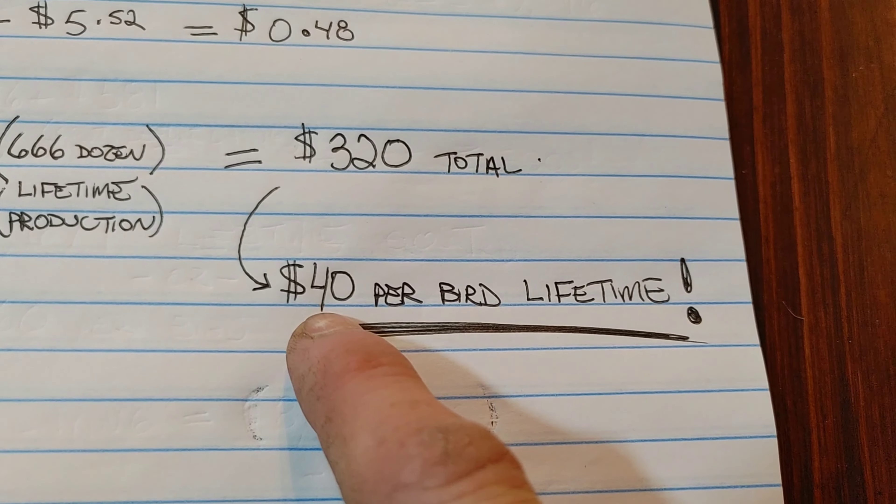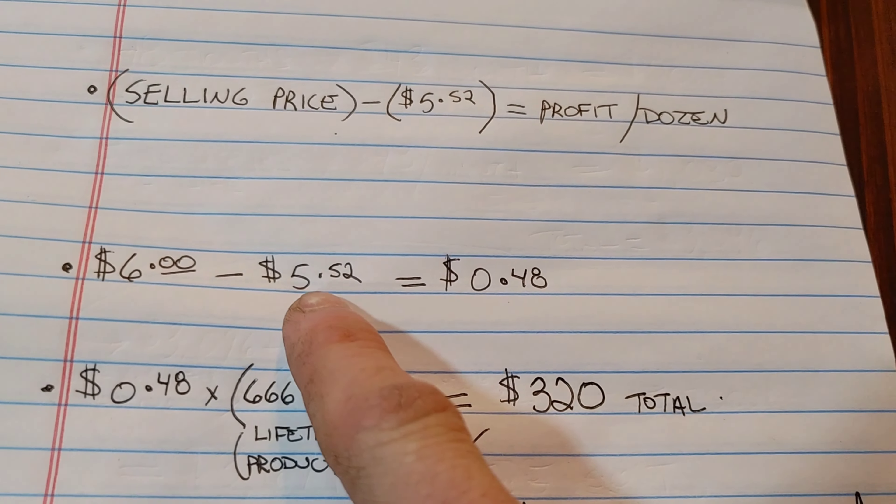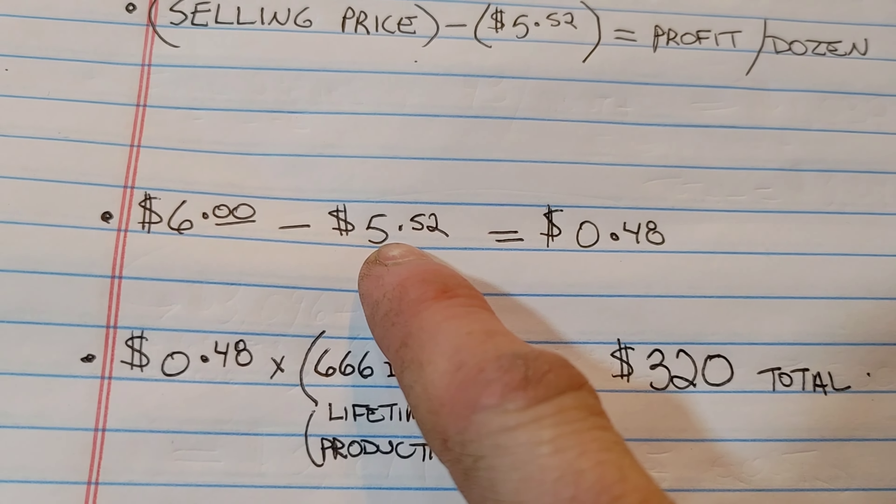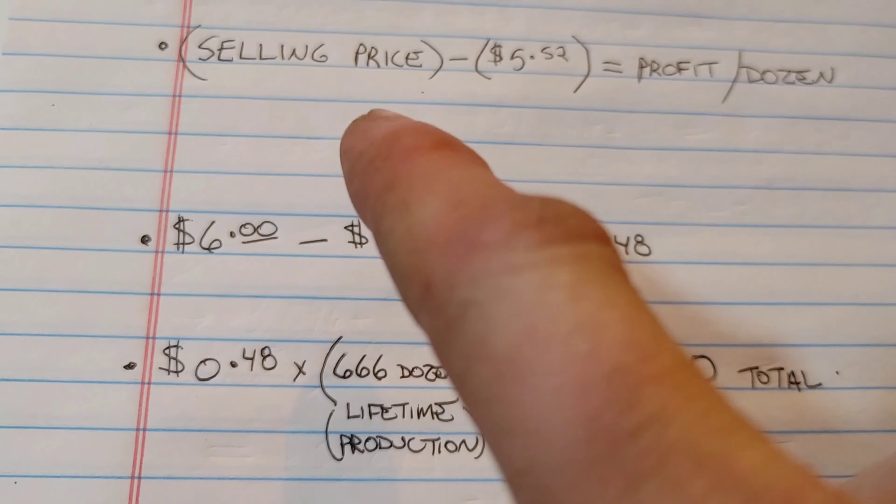My chickens are barred rocks and golden lace wyandottes. For the sake of these calculations, I am just using the barred rocks. The barred rocks are going to give me 250 eggs per year. It's about 20 per month per bird, 160 eggs a month between eight chickens.